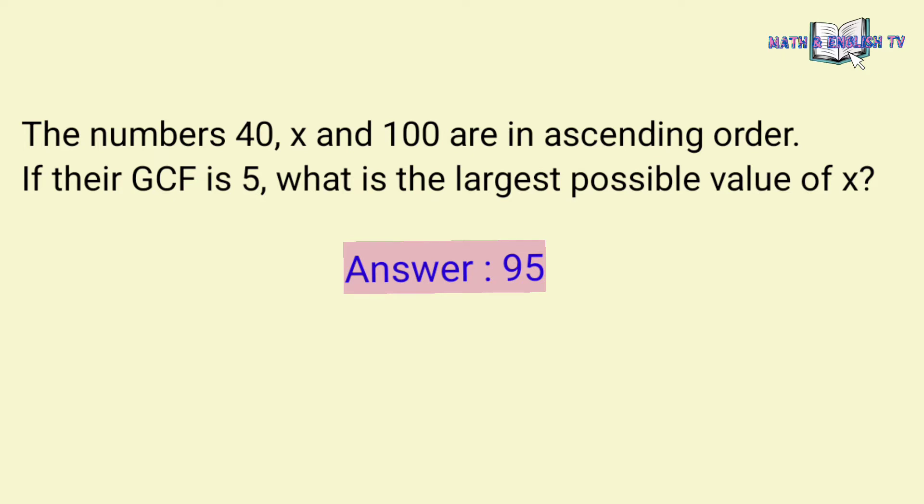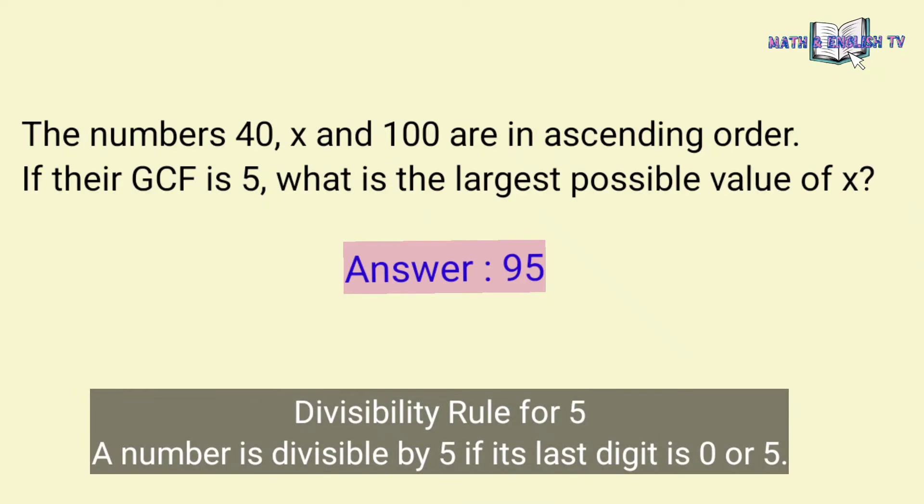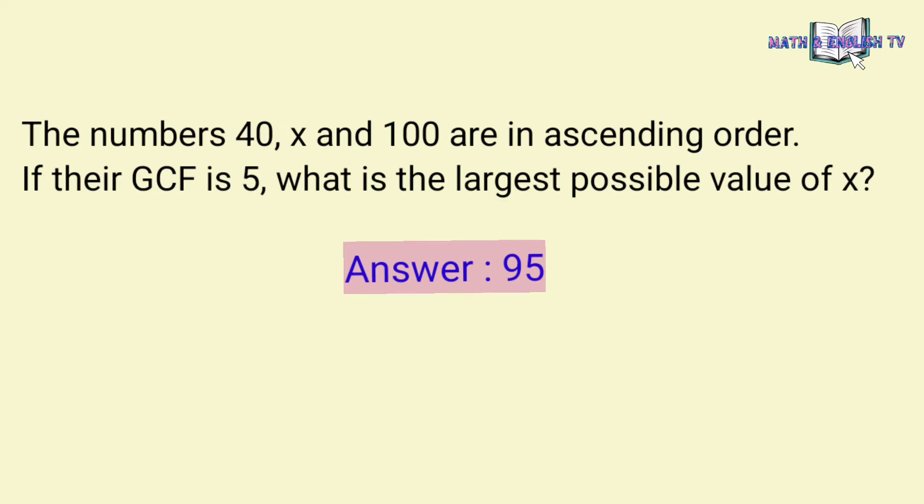95 is the largest number before 100 that is divisible by 5. Always remember the divisibility rule for 5: A number is divisible by 5 if its last digit is 0 or 5.